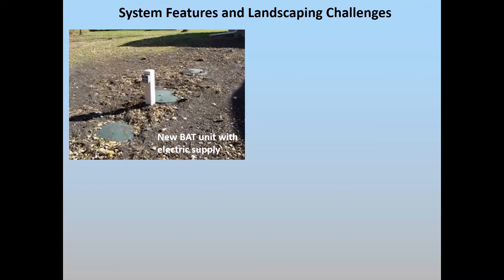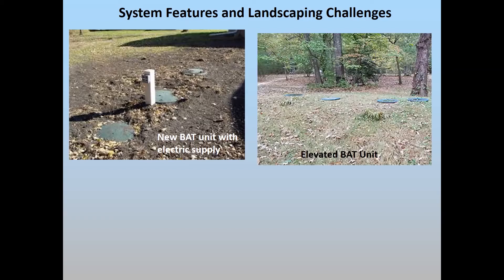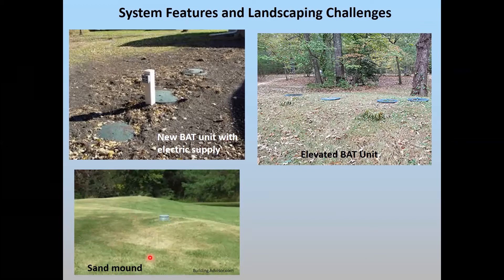Looking at some systems, here are examples of features of different types of septic systems, giving you an idea of what you have to deal with when trying to landscape or camouflage the system. Here's a BAT unit with three access ports and also an electrical supply post — that presents an additional challenge because you have something elevated about two feet above the ground surface. Here's a situation with an elevated BAT unit, most likely because of the lay of the land and soil types. And here's a sand mound on the bottom left, which could be several feet tall — especially challenging when placed in the front yard due to inadequate space or soils in the backyard.